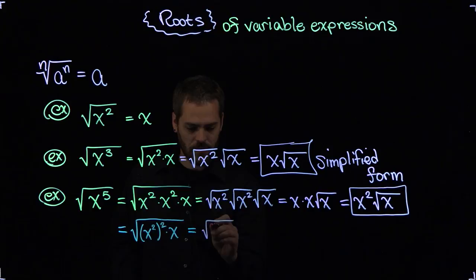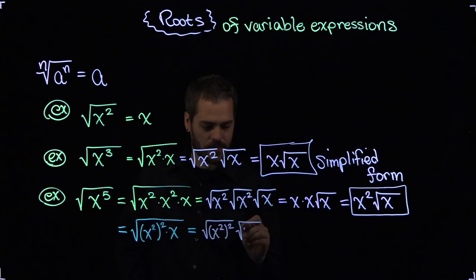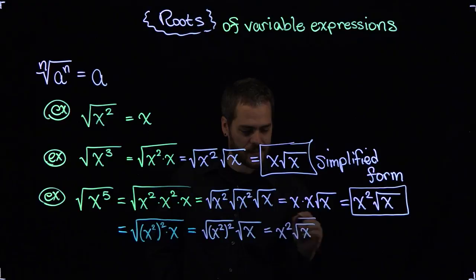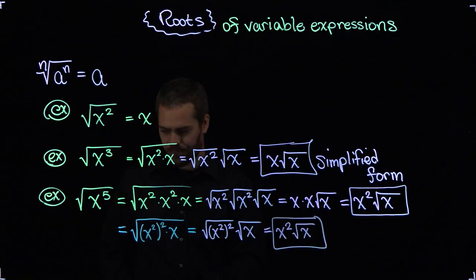When I take the square root of x squared squared times the square root of x, the square root of something squared is itself. So I end up with x squared here, a root x over here, and we get the same exact answer as this one with one less step.